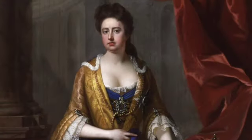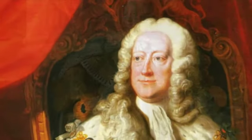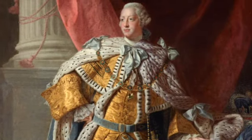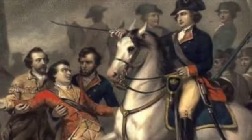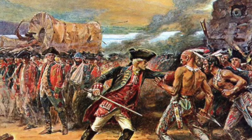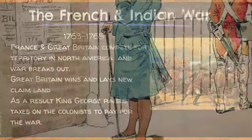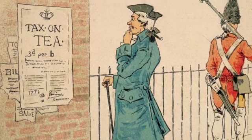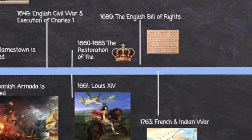Following the death of Mary in 1694, England sustained about 65 years where the crown ruled jointly with Parliament. Trouble begins in 1763 when King George goes to war with France for control of the North American continent. France and Great Britain compete for territory in North America, and war breaks out with the Indians making an alliance with the French against the American colonists. Great Britain goes on to defeat the French and the Indians, and as a result they lay claim to new lands west of the Appalachian Mountains. Unfortunately, the cost of the war forces the King to raise taxes on the colonists.